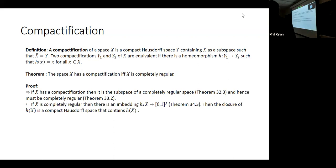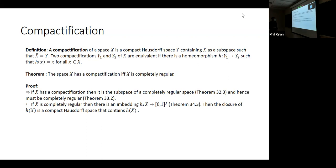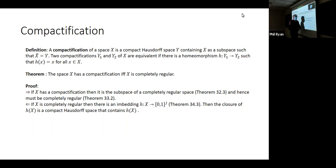If it has a compactification then it's a subspace of a compact Hausdorff space, which is completely regular by the theorem from chapter 32, and hence must be completely regular by a theorem from chapter 33. On the other hand, if X is completely regular, then we know there is an embedding of X into some product of the unit interval — we did that in chapter 34. The closure of the image there is a compact Hausdorff space since closed subsets of compact spaces are compact.